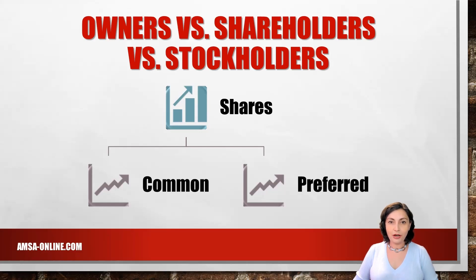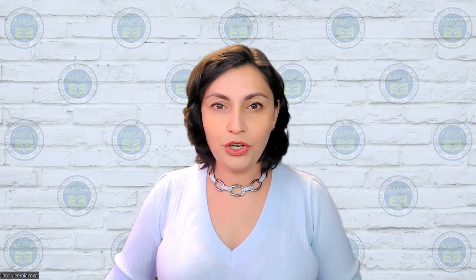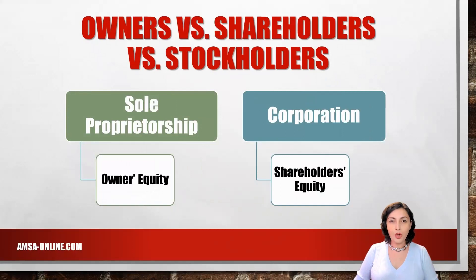A share is one unit of ownership interest in a corporation. Examples of shares are common or ordinary shares and preferred shares. A stock is an equity instrument issued by a corporation. It is divided into shares, which then represent ownership. One-person ownership of a corporation should also be listed as shareholder's equity, since the person owns 100% of stock.